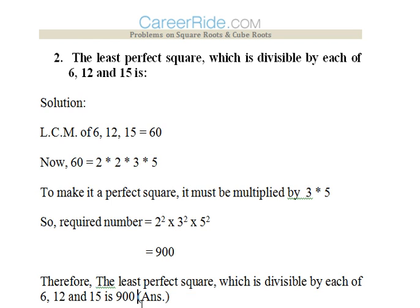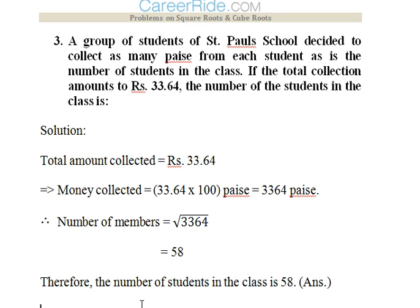Third question: a group of students at Saint Paul's School decide to collect as many paise from each student as is the number of students in class. Now the total collection is 33.64. The number of students in the class is: now the total amount is 33.64, so how much it would be in paise? It will be 3364 because multiplied by 100, one rupee contains 100 paise. This is total amount 3364 paise which is achieved by the same number of students collecting same number of paise. So we will find out the simple square root that is 58. The number of students in the class are 58 and each student contributed 58 paise. So 58 into 58 goes up to 3364.